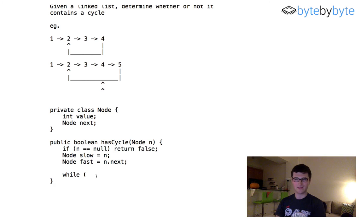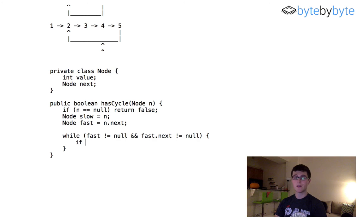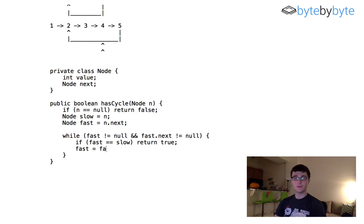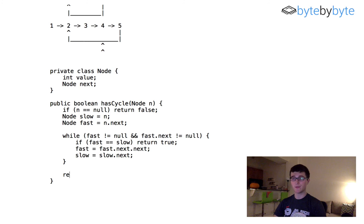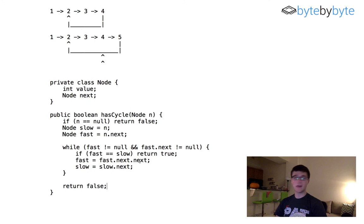The while condition is: while fast is not equal to null AND fast.next is not equal to null. Inside the loop, we first check if fast equals slow — if so, return true because we found a cycle. Otherwise, fast equals fast.next.next and slow equals slow.next. If we don't find a cycle, it means we reached the end of the list, so after the loop we return false. That's all there is to implementing this algorithm — it's pretty simple to implement, it's just the understanding that's a bit tricky.